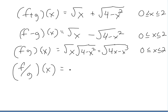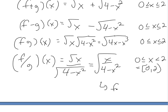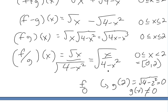For division, (f/g)(x) = √x / √(4−x²), which can be written as √(x / (4−x²)). The domain is [0, 2) — open interval at 2 — because if you plug in x = 2, g(2) = √(4−4) = 0, and you can't divide by 0. So x = 2 must be excluded, making the upper bound an open interval.